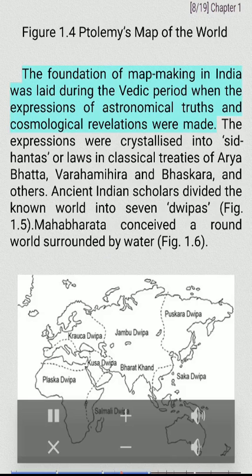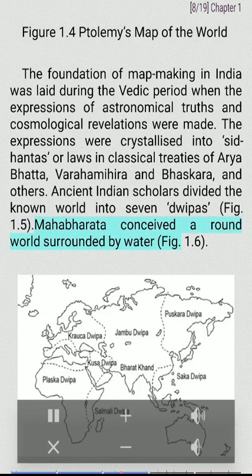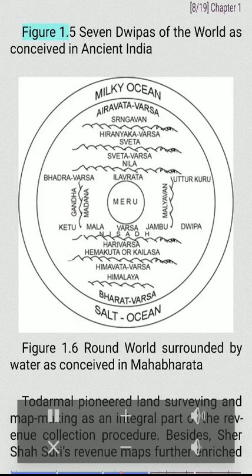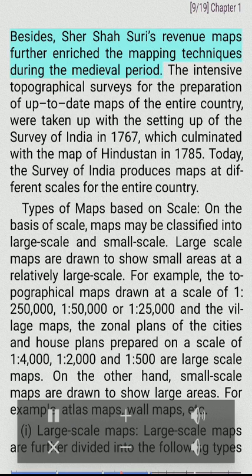The foundation of map making in India was laid during the Vedic period when the expressions of astronomical truths and cosmological revelations were made. These expressions were crystallized into Siddhantas, or laws, in classical treaties of Aryabhata, Varahamihira and Bhaskara, and others. Ancient Indian scholars divided the known world into seven Dwipas (Fig. 1.5). Mahabharata conceived a round world surrounded by water (Fig. 1.6). Todarmal pioneered land surveying and map making as an integral part of the revenue collection procedure. Besides, Sher Shah Suri's revenue maps further enriched the mapping techniques during the medieval period.